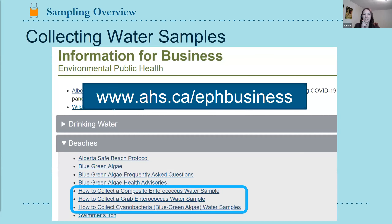On the AHS website — ahs.ca/ephbusiness — under the beaches dropdown, you'll find three documents that start with 'How to Collect,' which provide the step-by-step process for collecting the different sample types. Sarah will now review that process.